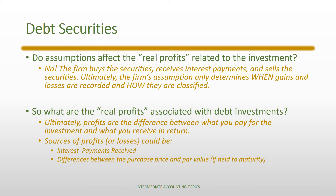In addition to interest payments, there is the potential for a difference between the purchase price and the par value — the amount paid at maturity. If I purchase the asset for less than par value, that's a discount, and there will be profit from that difference. If I pay more than par value, that's a premium, and I would have a loss. Even if I don't hold it to maturity, there could be a profit or loss if I sell the asset early — the difference between what I paid and what I sell it for.